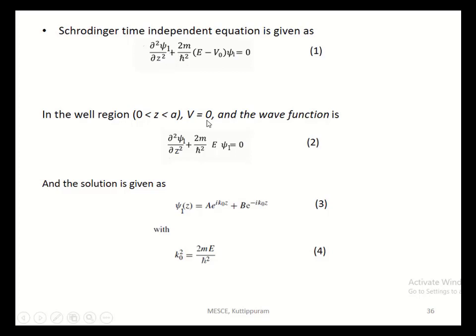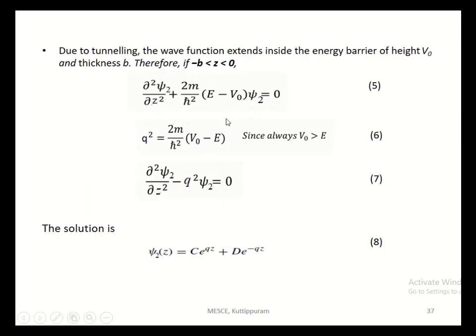Now we will move to the barrier region. The barrier region is between 0 and −B, where V equals V₀. The Schrödinger time-independent equation becomes ∂²ψ₂/∂z² − q²ψ₂ = 0, where q² = (2m/ℏ²)(V₀ − E). The condition is V₀ is always greater than E, so a sign change occurs. The solution is ψ₂(z) = C·e^(qz) + D·e^(−qz). This is the wave function for the barrier region.